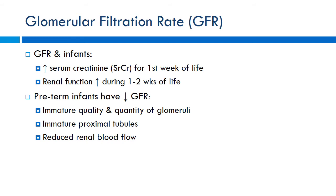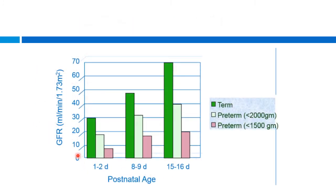After the first week, renal function begins to improve, picking up over the first one to two weeks. The more premature, the more immature the kidneys, leading to electrolyte and fluid balance issues. A practical rule: if a child is producing more than 1 mL/kg/hour of urine, they have reasonably adequate GFR. GFR in a neonate is roughly 30 to 40 mL/min/1.73m², reaching near-adult patterns by about six months of age.